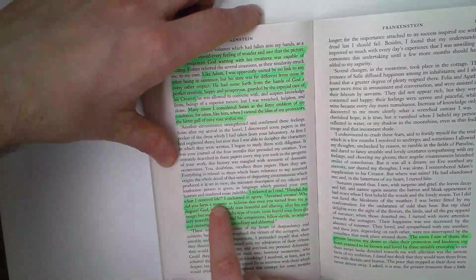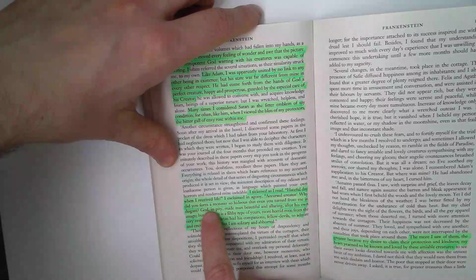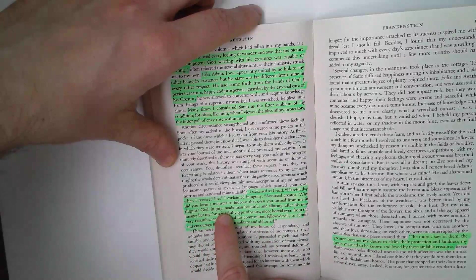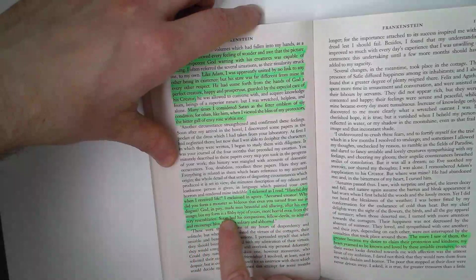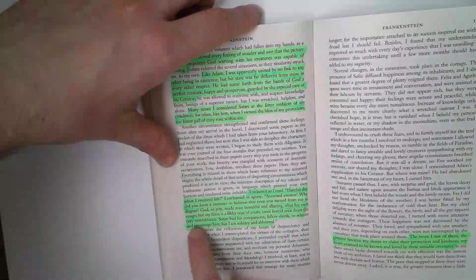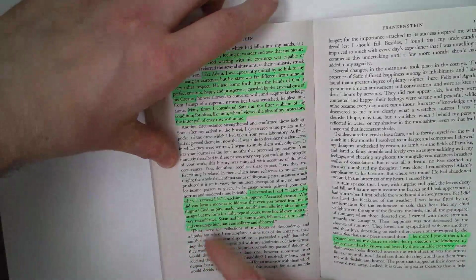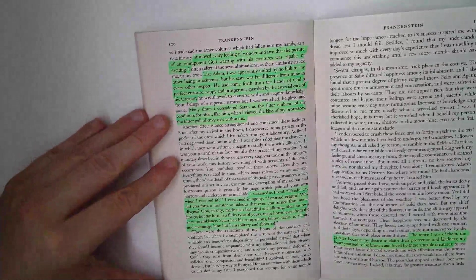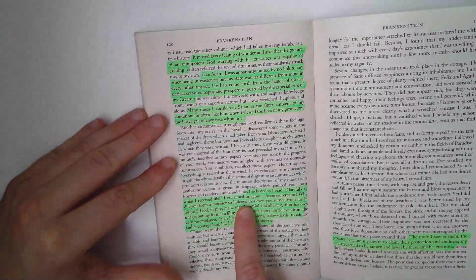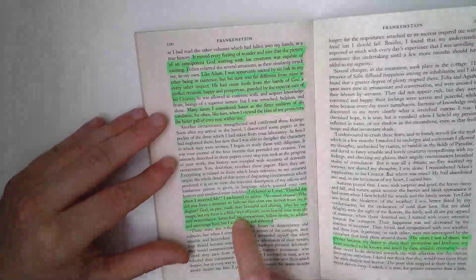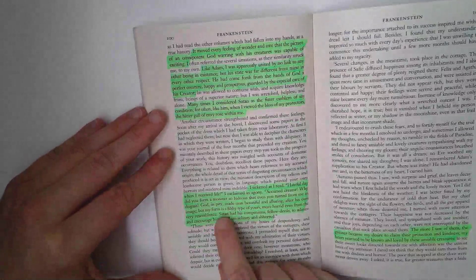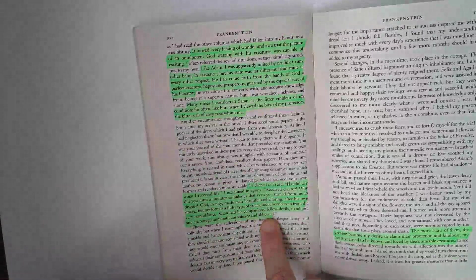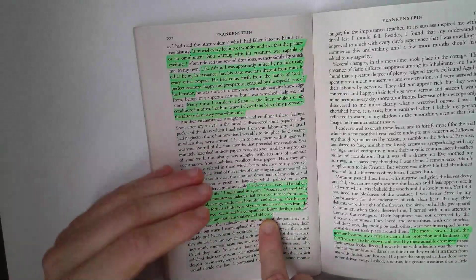Then the creature reads the papers about his creation. And I sickened as I read. Hateful day when I received life. Cursed creator. Why did you form a monster so hideous that even you turned from me in disgust? God in pity made man beautiful and alluring after his own image, but my form is a filthy type of yours, more horrid even from the very resemblance. Look at the aggressive language there, there's an imagery of self-loathing the creature feels. Hateful day when I received life, a monster so hideous, a filthy type of yours. And the aggression towards Victor. Satan and his companions, fellow devils, to admire and encourage him. But I am solitary and abhorred. He's hated by mankind as well.